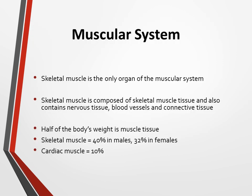Let's start today's lecture on the muscular system. Skeletal muscle is the only organ of the muscular system. Skeletal muscles are composed of skeletal muscle tissue and also contain nerve tissue, blood vessels, and connective tissue. Half of the body weight is muscle tissue — skeletal muscles account for about 40% in males and 32% in females.